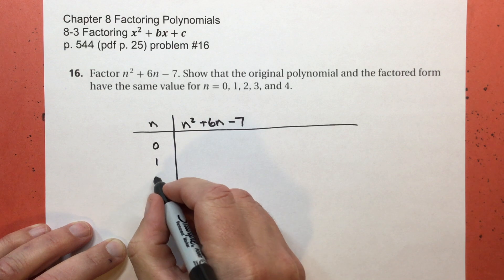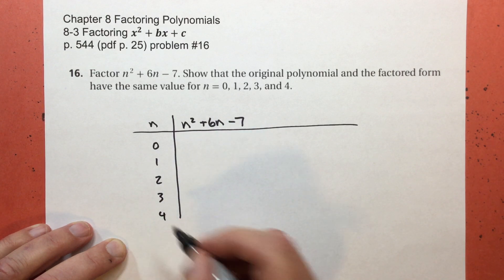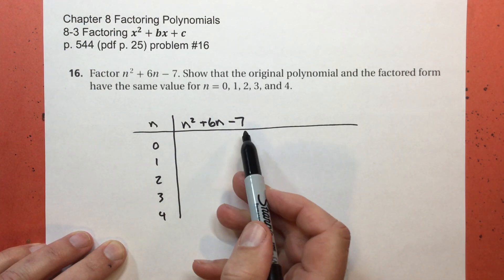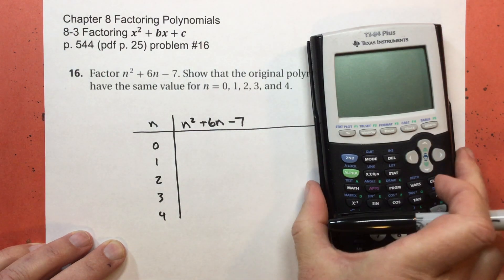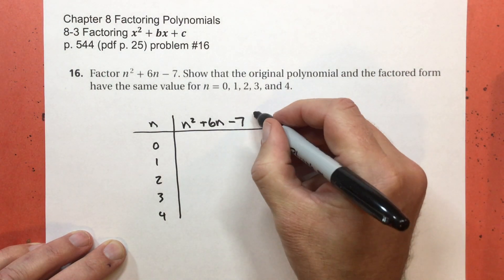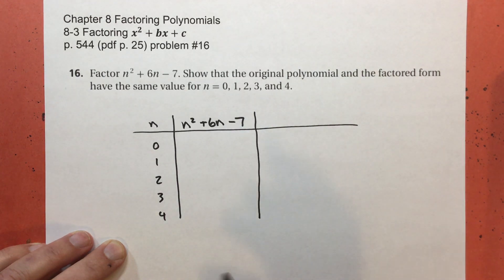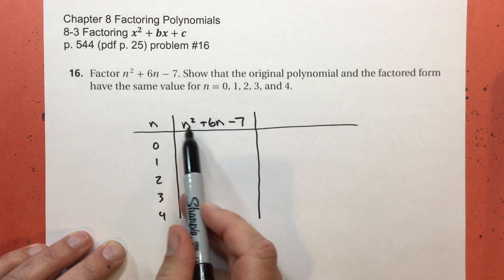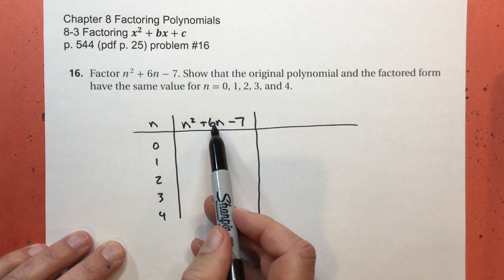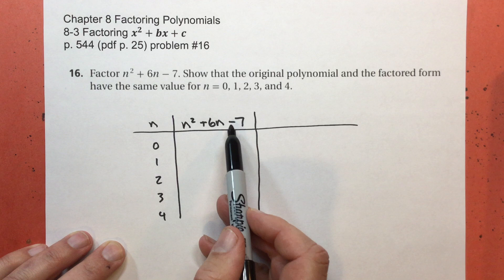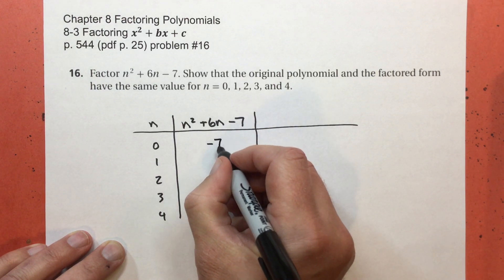0, 1, 2, 3, and 4. And you can either do this on paper, you can even do it in your head, or if you want, you can grab one of these calculators. All right, so let's evaluate 0. 0 squared plus 6 times 0 is going to be 0 plus 0. 0 plus 0 minus 7 equals negative 7.